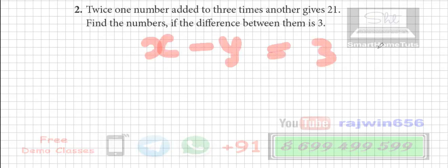Why x square? Because twice one number. Twice doesn't mean square. It is multiplied by 2.